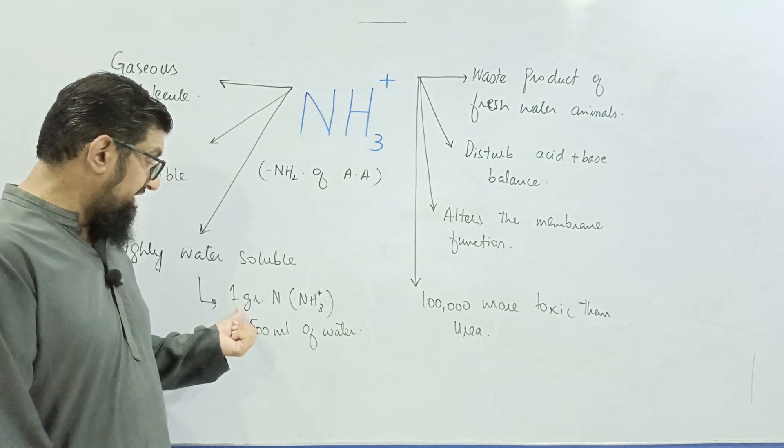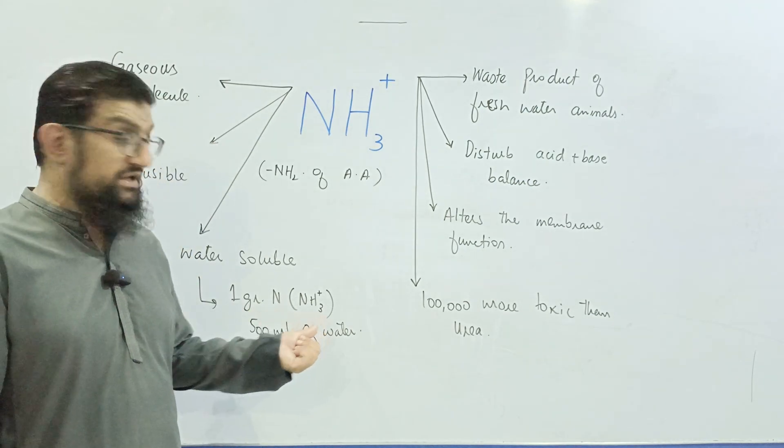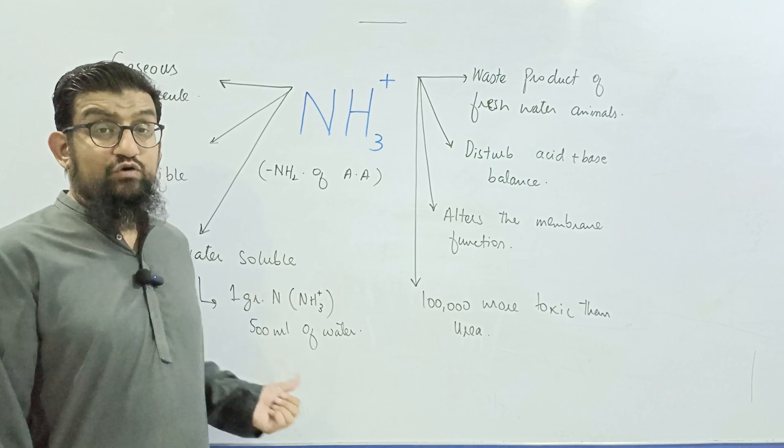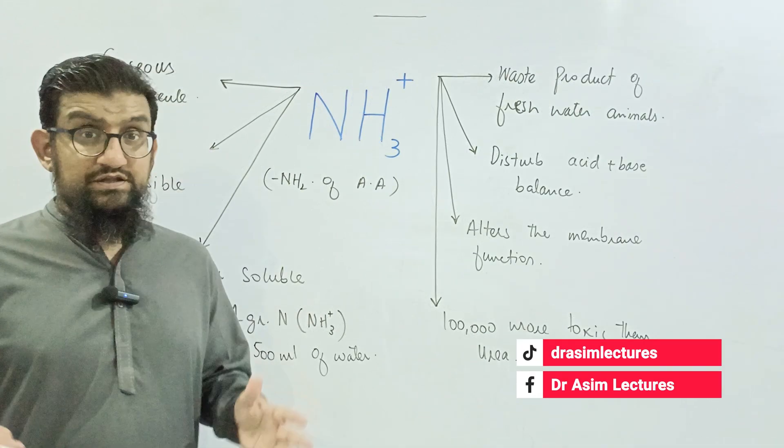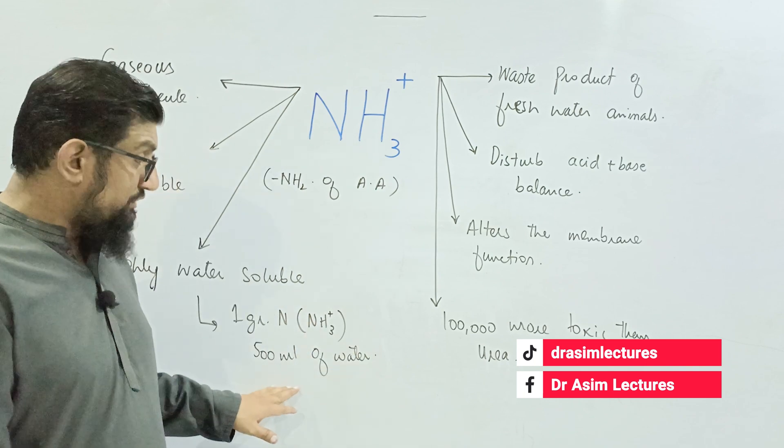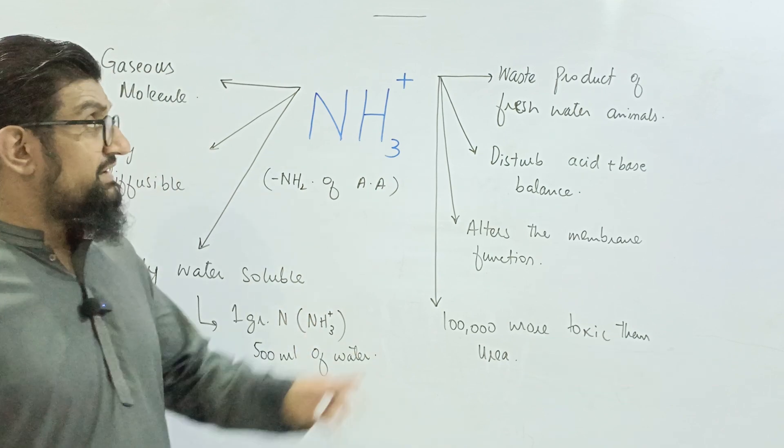It's so water soluble that one gram of nitrogen in the form of ammonia requires 500 ml of water to be excreted. Now this is huge. This is a lot of water required to remove ammonia from the body.